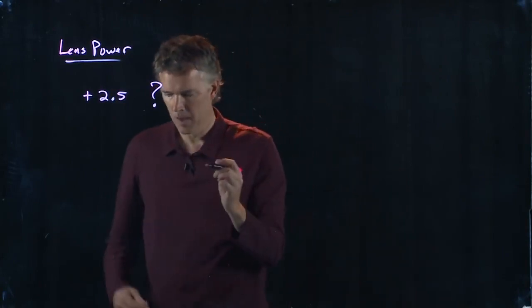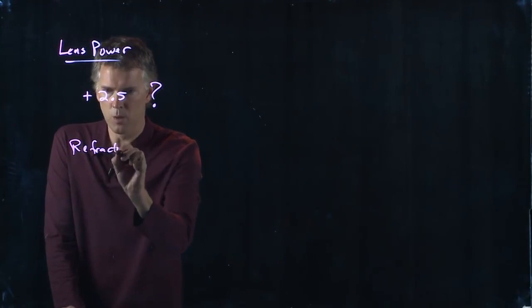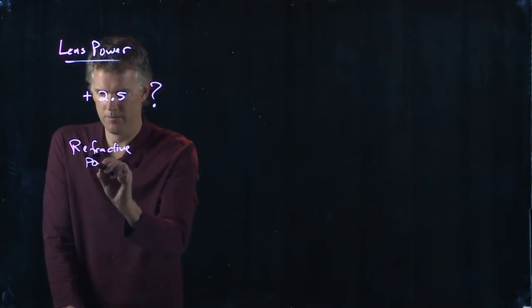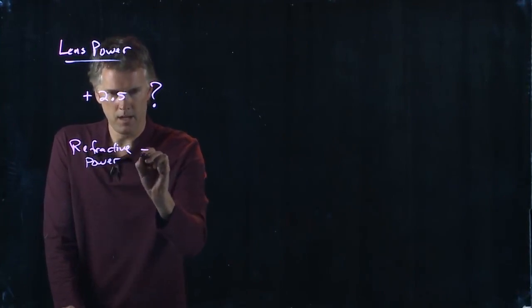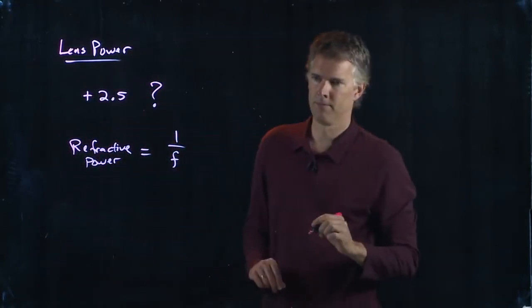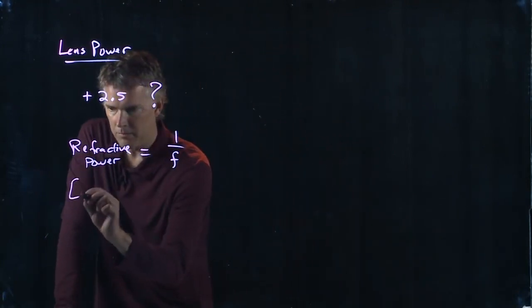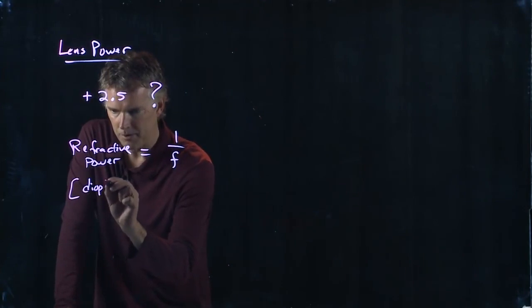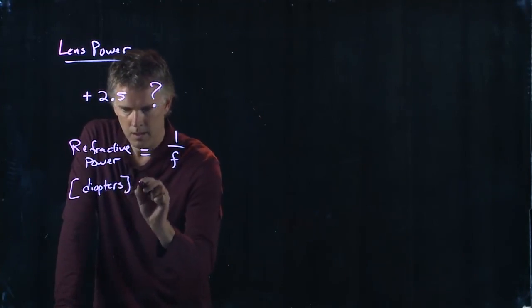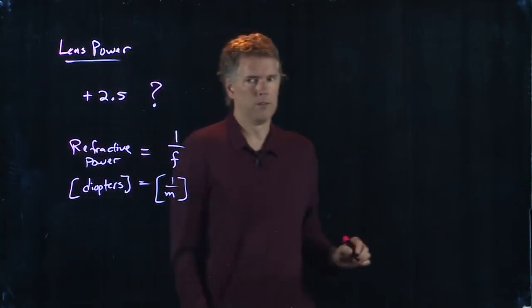What is the lens power? Power, or more specifically refractive power, is 1 over F. It's just 1 over the focal length of the lens. This is measured in something called diopters, and diopters is, of course, just 1 over meters.